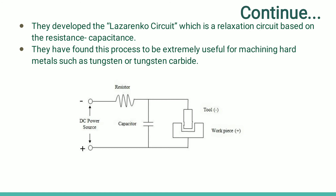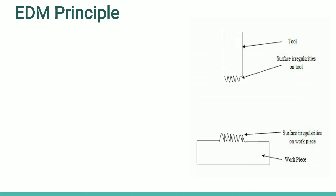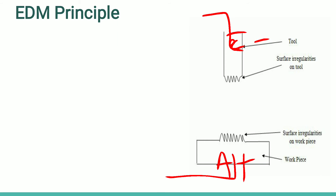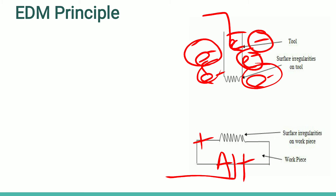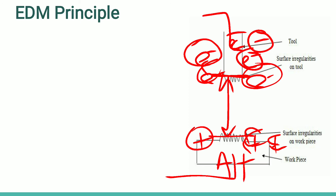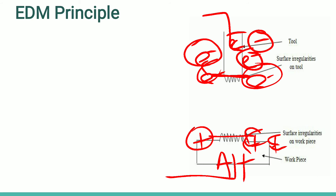Next is the EDM principle. Using a figure, this is the tool and this is the workpiece. The tool is made the cathode — that is, the negative side — and the workpiece is the anode, the positive side. Once the potential difference is created, since the tool is the negative side, electrons are generated from the tool side and positive ions are generated from the workpiece side.